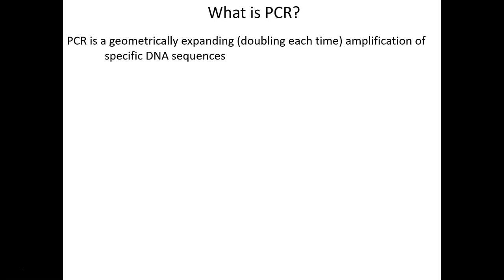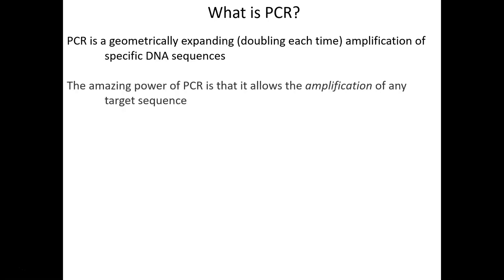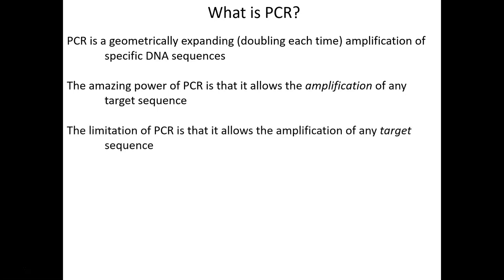If you start with two DNA sequences, after one cycle of PCR you go from two to four, then four to eight, eight to sixteen, sixteen to thirty-two. With just doubling each round, it only takes about 28 to 30 cycles of PCR to get on the order of tens of millions, if not billions of copies. The amazing power of PCR is that it allows for the amplification of any target sequence — and the limitation of PCR is also that it allows for the amplification of any target sequence.